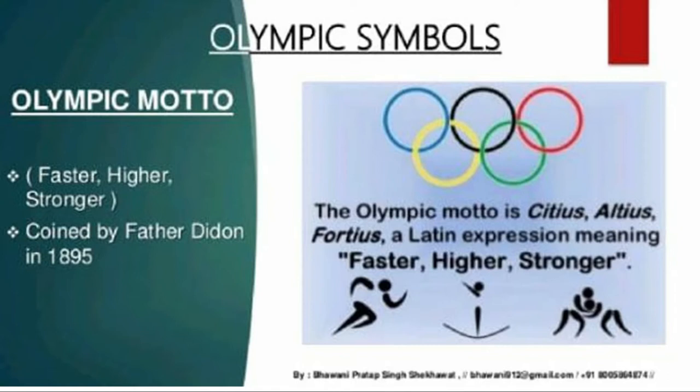The first point we are going to study today is Olympic symbols or emblem. It comprises of five interlinked rings or circles to represent the sporting friendship of all people. The rings also symbolize the five continents — Africa, America, Asia, Australia, and Europe. Each ring is of a different color: blue, yellow, black, green, and red.